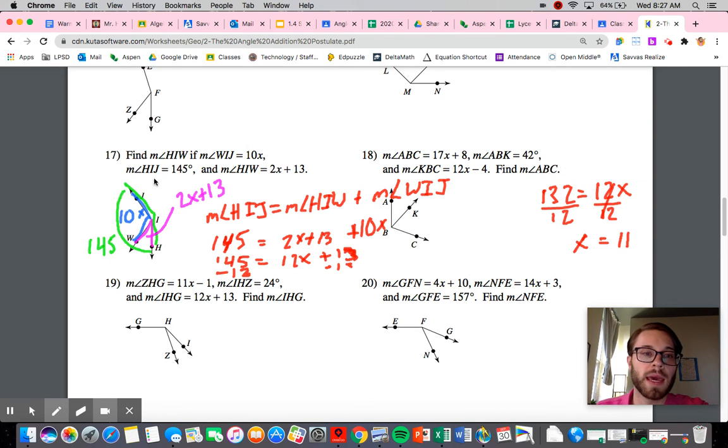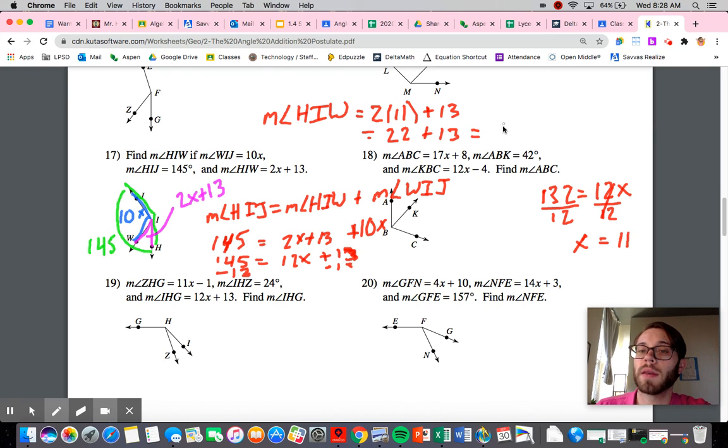So let's see if that's what it was asking for. It was not saying specifically just find X. However, we did need to find X to be able to determine the measure of HIW. So now to find the measure of angle HIW, I need to plug in the 11 into right here. So the measure of angle HIW is equal to, I'm not going to write X anymore, I'm going to write 11 because I know X is 11 plus 13. Now two times 11 is 22 plus 13. And so when we add those together, we will get 35.